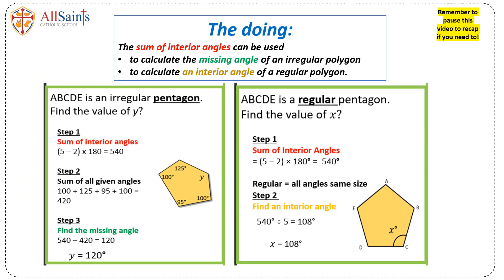The sum of interior angles can be used to calculate the missing angles of the polygon. In an irregular pentagon, start by finding the sum of interior angles, which can be found using the formula n minus 2 times by 180.